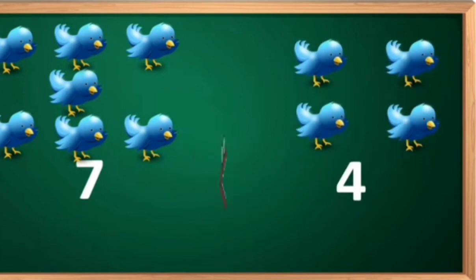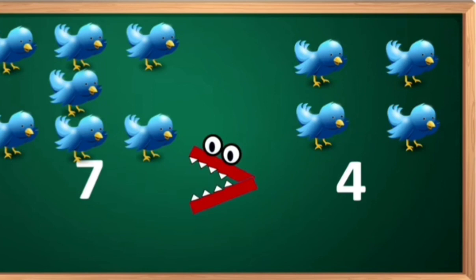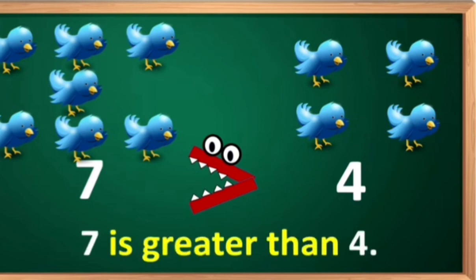One more example. There are seven birds, and the other side there are four birds. Which side will the crocodile open its mouth? Towards the number seven, because seven is greater than four.